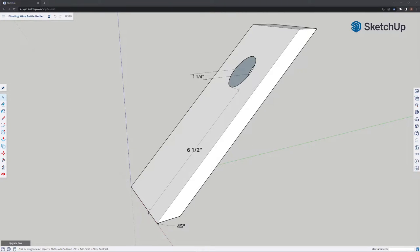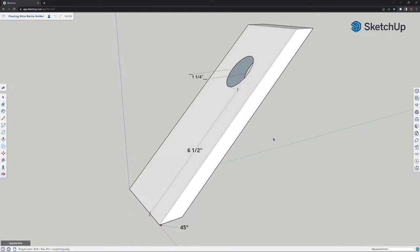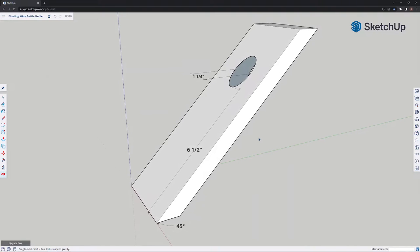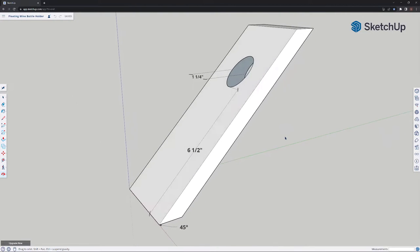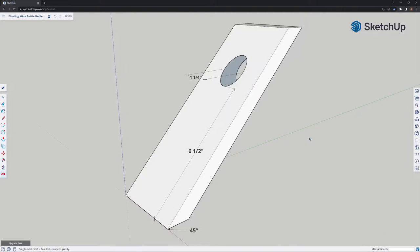Looking at the wine bottle holder drawing in SketchUp I want to point out the three and really the only three critical dimensions to get the perfect balance with the wine bottle. First is the angle of 45 degrees that's the bottom angle and also the angle that the hole is drilled at.